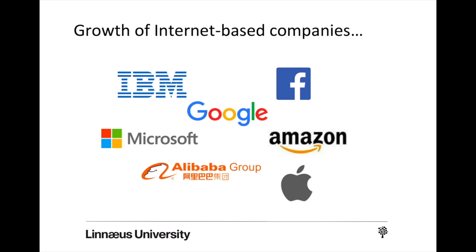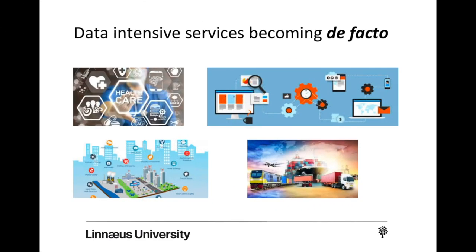In other words, those companies are also enabling the availability of internet all around the globe. To name a few of them: IBM, Google, Alibaba, Amazon, Apple, Facebook, Microsoft are dominating the internet world today. Since our life is dominated by the internet, in other words, today it's not obvious to think about a life without an internet connection.